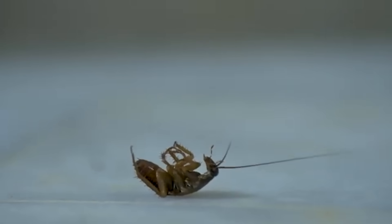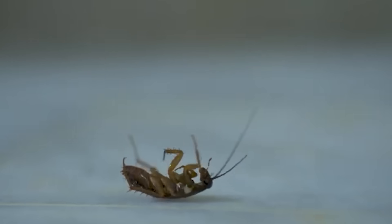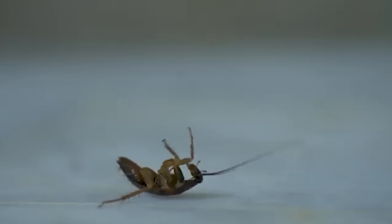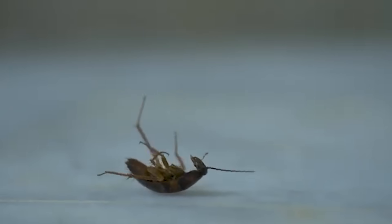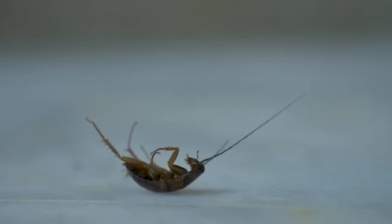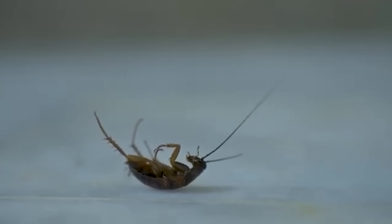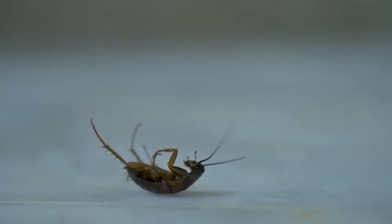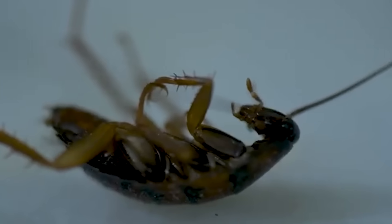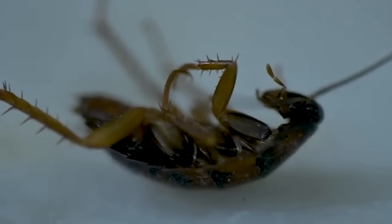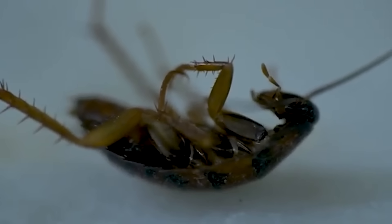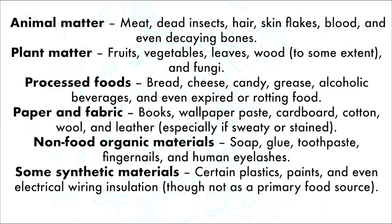The only things they won't eat are toxins or substances with a heavy smell like garlic, and even then, if it's organic matter, they will eat it if they have no other option. They have the broadest diets in the insect kingdom, which is partly the reason they are so comfortable in our homes. Here is a list of just some of the things cockroaches can eat.